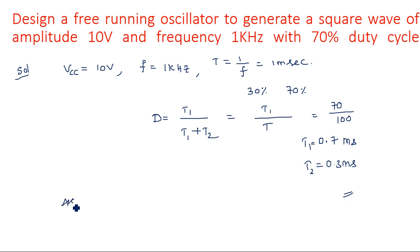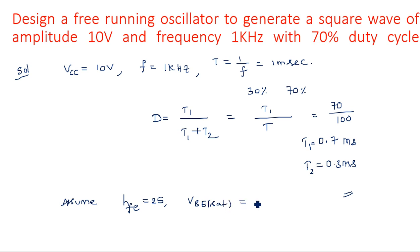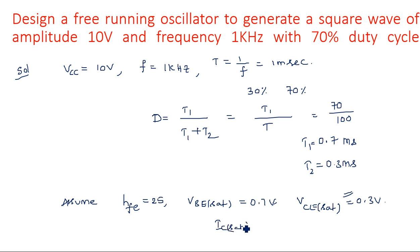Assume hfe equal to 25, and saturation voltages: Vbe_sat equal to 0.7 volts and Vce_sat equal to 0.3 volts. Ic_sat is assumed to be 5 milliamperes, same as in the previous example.